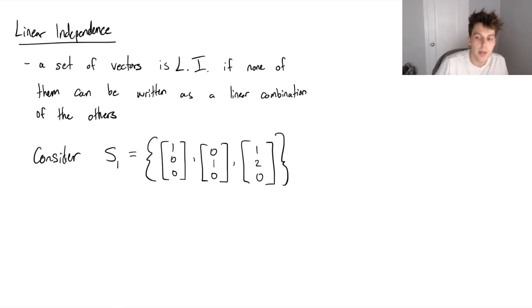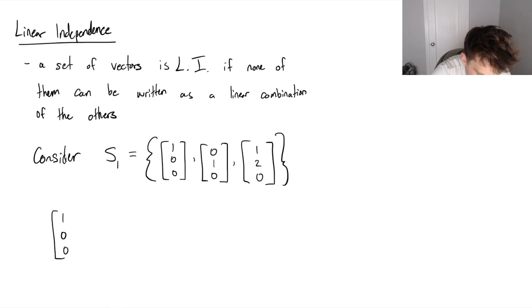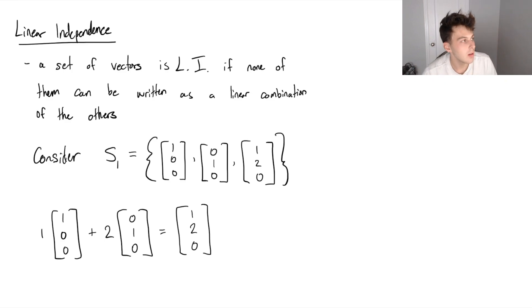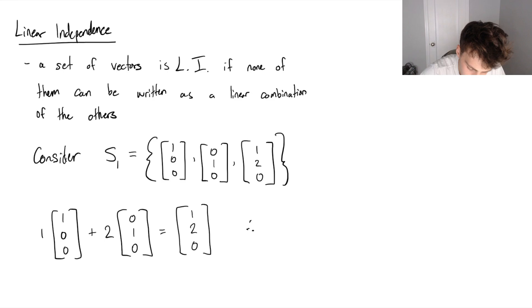We can very clearly see that the last vector in our set is a linear combination of the first two vectors. We can see that 1 times (1, 0, 0) plus 2 times (0, 1, 0) is going to be equal to our last vector of the set. So from our definition of linear independence, we can see that this does not meet the definition, because one of the vectors in the set can be written as a linear combination of the other vectors in the set. Therefore, S1 is not linearly independent.